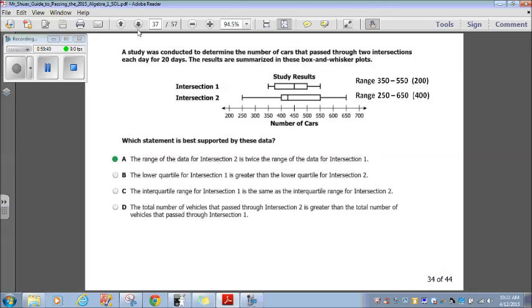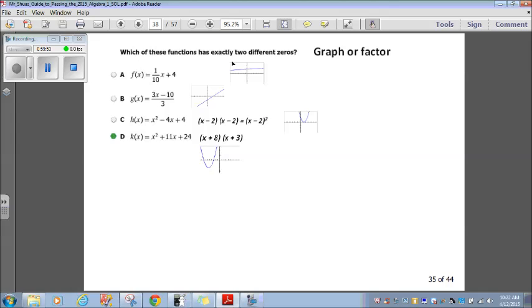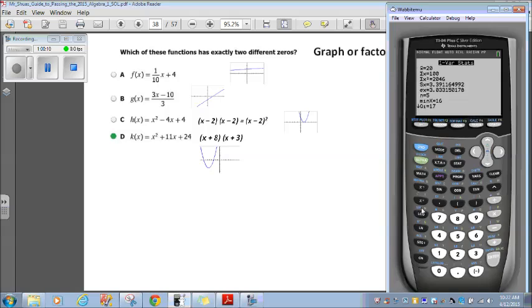So A is the only one that makes sense. Okay, let's go on to number 35. Which of these functions has exactly two different zeros? Well, I said you can graph or factor. You have two options here. Now, I graphed each one just to check. And then I also factor. Now, if you graph one, matter of fact, let me just do it for you right now. So let's clear this. The first one is f of x equals 1 over 10x plus 4. So we graph that. That's a graph.